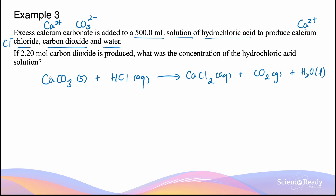Let's check if the equation is balanced. Calcium: one on both sides. Carbon: one on both sides. Oxygen: three in calcium carbonate on the left, and three combined in carbon dioxide and water on the right. However, chlorine is not balanced — there are two chlorines on the right but only one on the left. So we multiply HCl by two. This also balances the hydrogens: two on the left and two in the water molecule on the right.